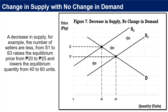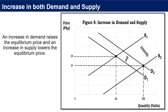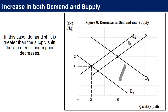A decrease in supply — for example, fewer sellers (S1 to S3) — raises the equilibrium price from 20 pesos to 25 pesos and lowers the equilibrium quantity from 60 to 40 units. An increase in both demand and supply results in an increase in equilibrium quantity, though the effect on equilibrium price is uncertain. An increase in demand raises the equilibrium price while an increase in supply lowers it. In Figure 8, the equilibrium price falls because the change in supply is greater than the change in demand. If the change in demand is greater, equilibrium price will increase. A decrease in both demand and supply results in a decrease in equilibrium quantity.